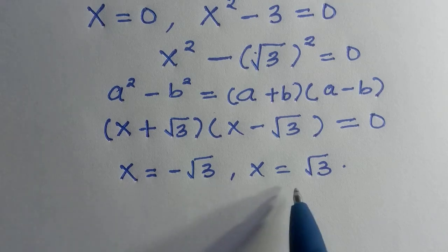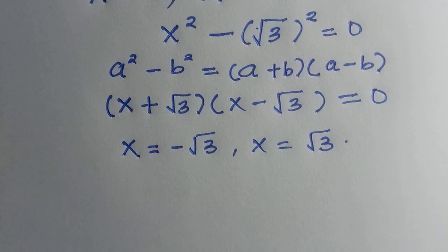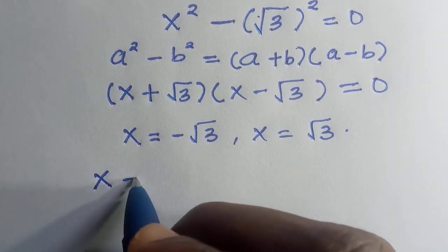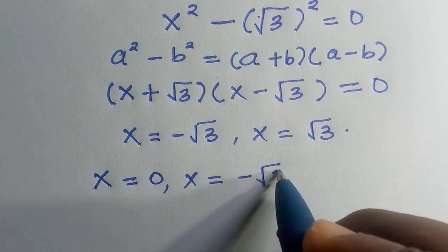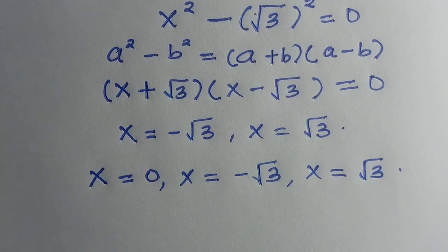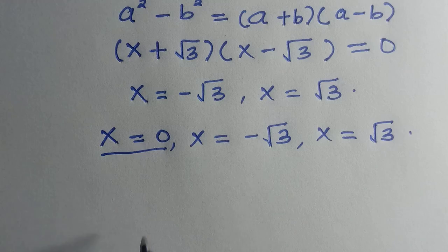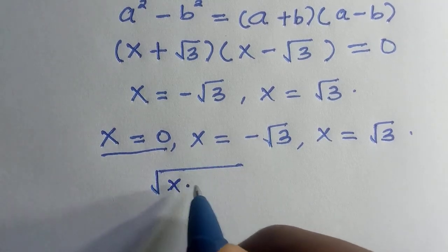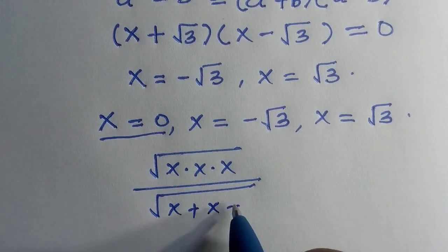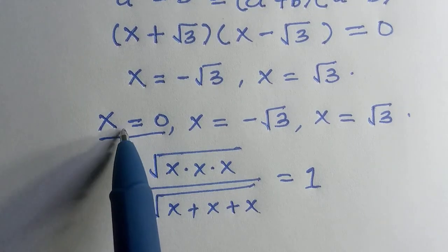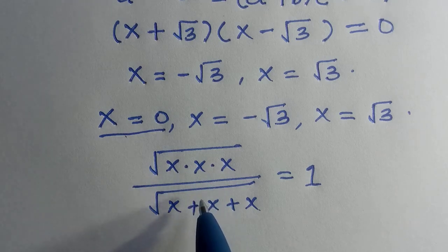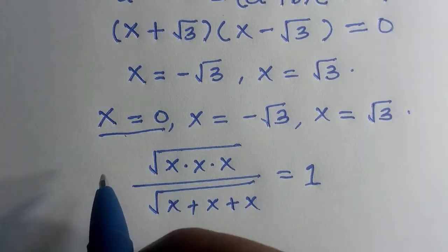But we cannot just say all these solutions satisfy the given problem, since it is a radical and also a quotient form of radical. Combining all solutions: x equals 0, x equals negative root 3, and x equals root 3. Let's test x equals 0. We substitute into square root of x times x times x, divided by square root of x plus x plus x, equals 1. When x equals 0, we get 0 at the denominator, which is undefined — not equal to 1. Therefore, x equals 0 is rejected.